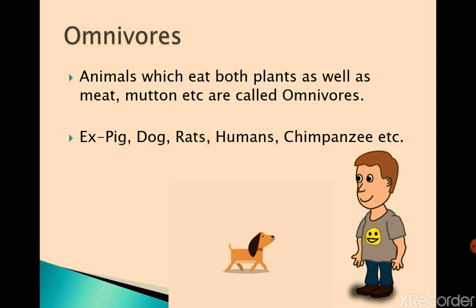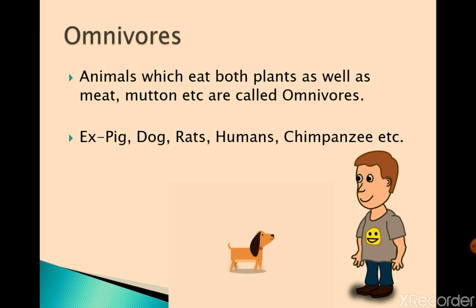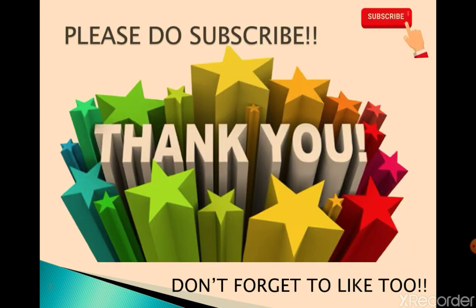The third category is omnivores — we see them in our surroundings and we humans are also omnivores. Animals which eat both plants as well as meat are called omnivores, like humans, dogs, pigs, rats and chimpanzees. Please subscribe to this video and don't forget to like. Thank you!